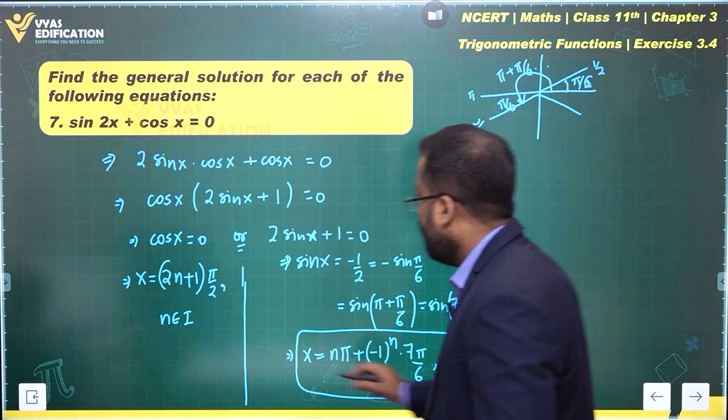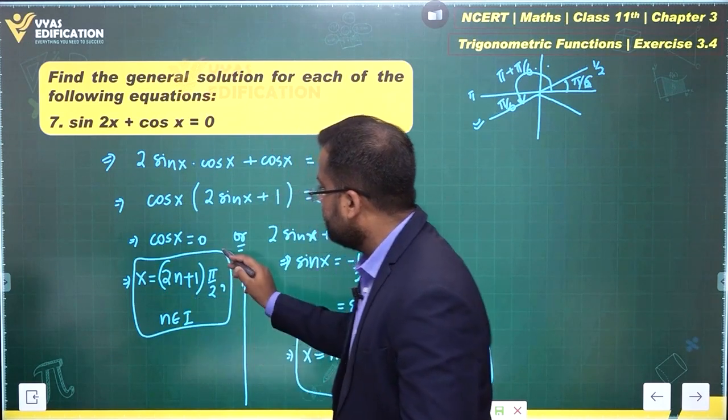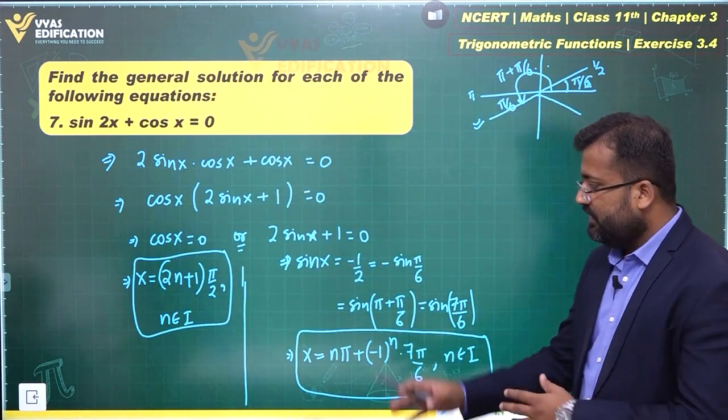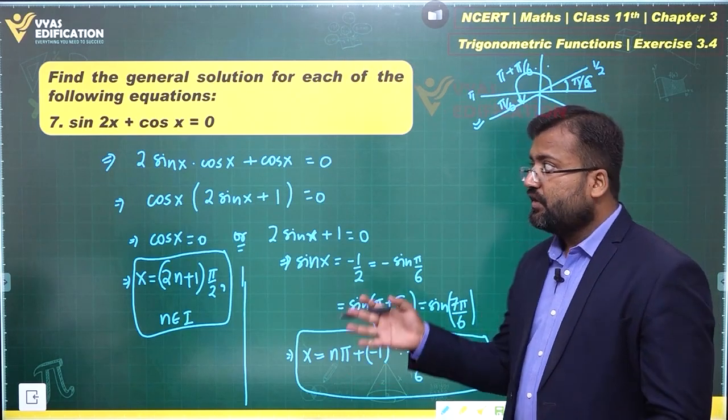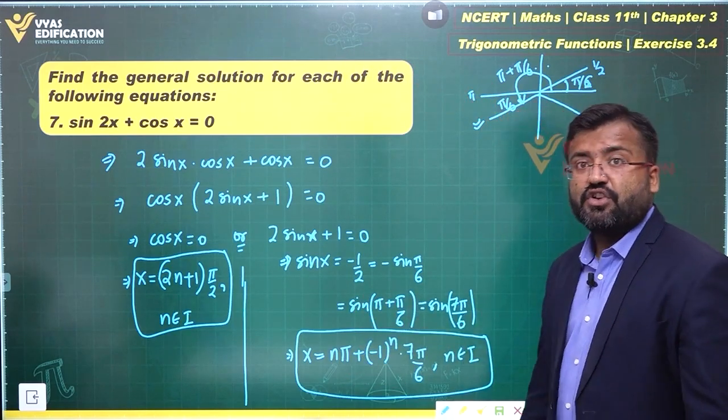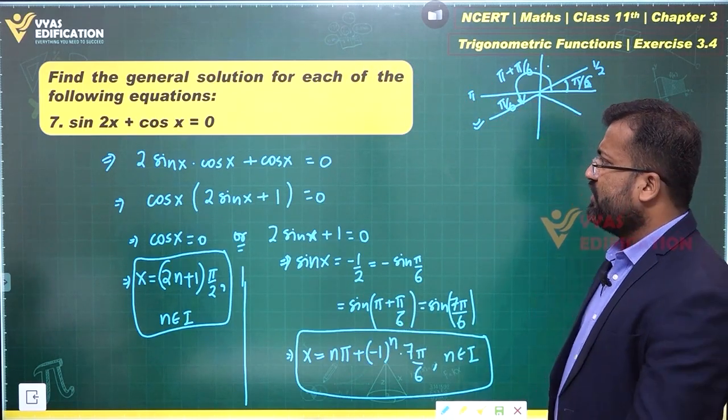This or this is my answer. This or this is my final answer for this question. Sin 2x plus cos x equals 0. Is that all? Yes. That's all in this question.